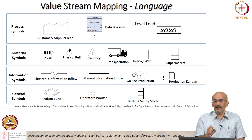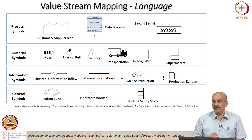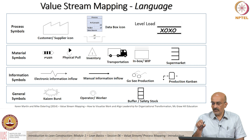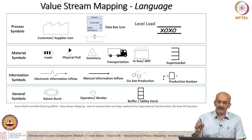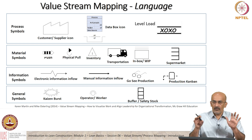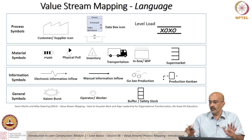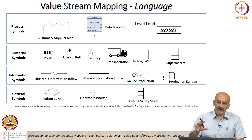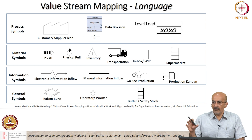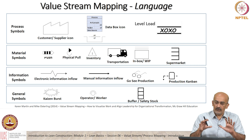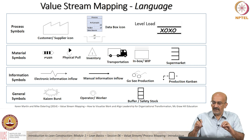I am not going to go through each one and describe what it is. These are well documented and easily accessible on the web. We will use some of these symbols in the examples and then you will get an idea of how the symbology works. But more than looking at the symbols today, we are looking at how a value stream map is put together. The focus today will be on the form of the map, not the specific symbols.